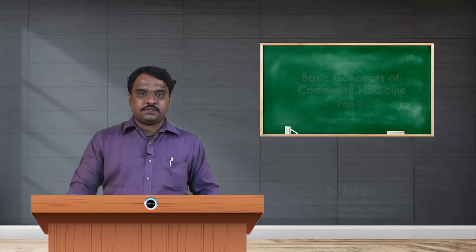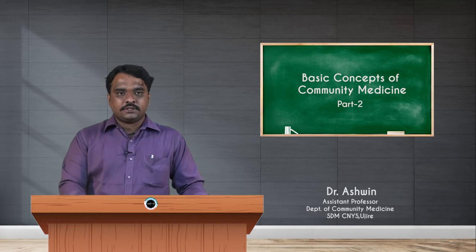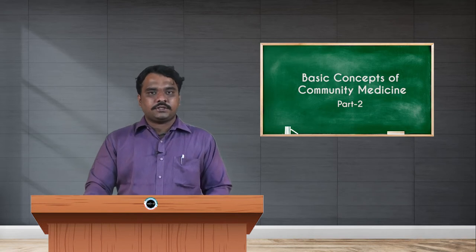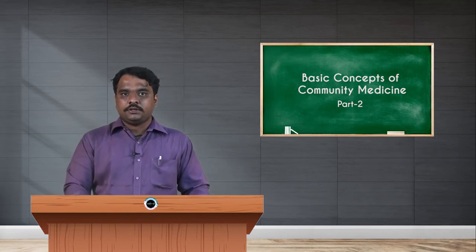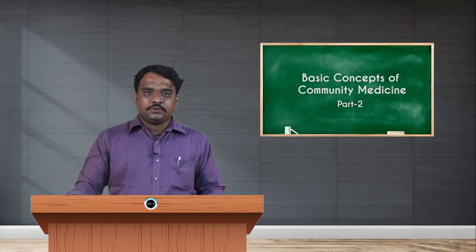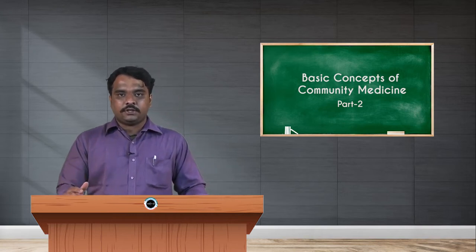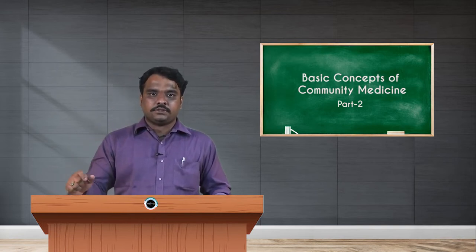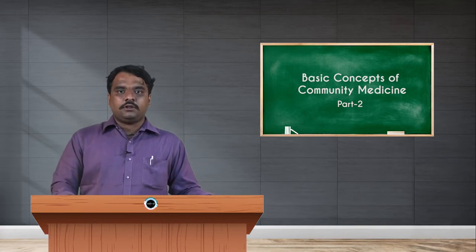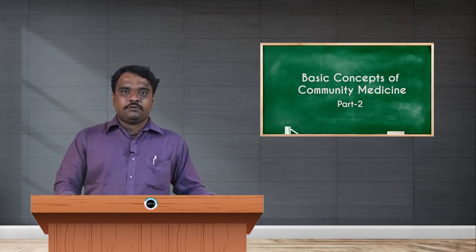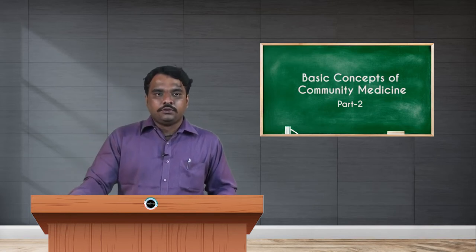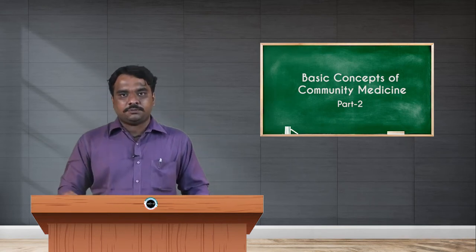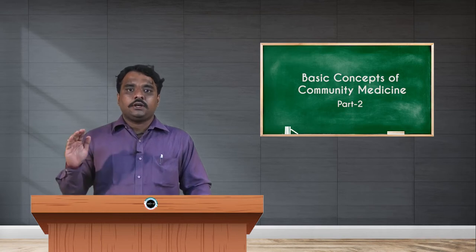Hello students, welcome to the session. We were discussing the basic concepts of community medicine. In the previous presentation, we discussed the definition of community medicine, the objectives, and the wellness wheel, which has seven variations — seven different aspects: physical, mental, spiritual, occupational, environmental, emotional, and social health. Now we are seeing the spectrum of health and determinants of health.